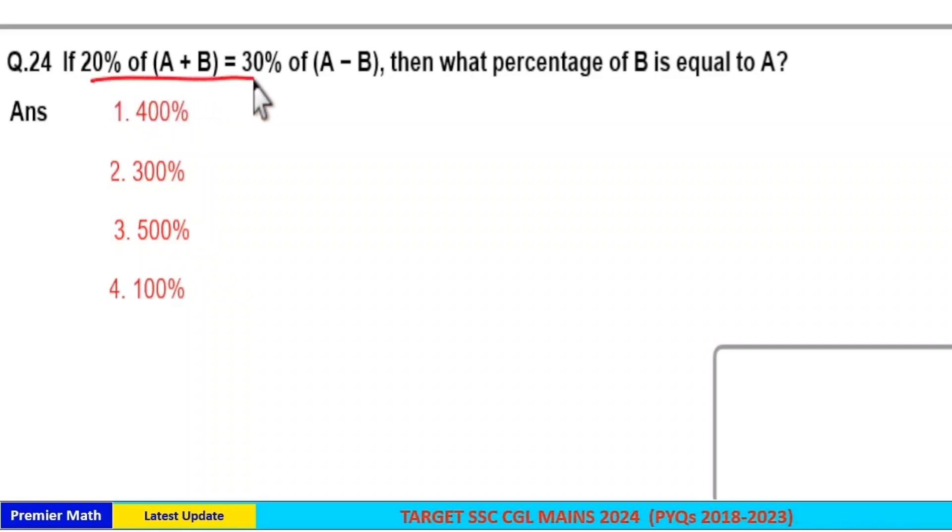If 20% of a plus b is 30% of a minus b, then what percentage of b is equal to a?